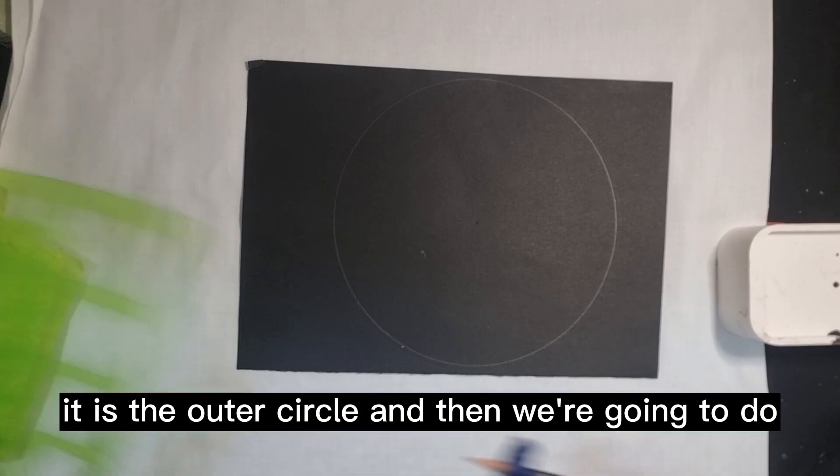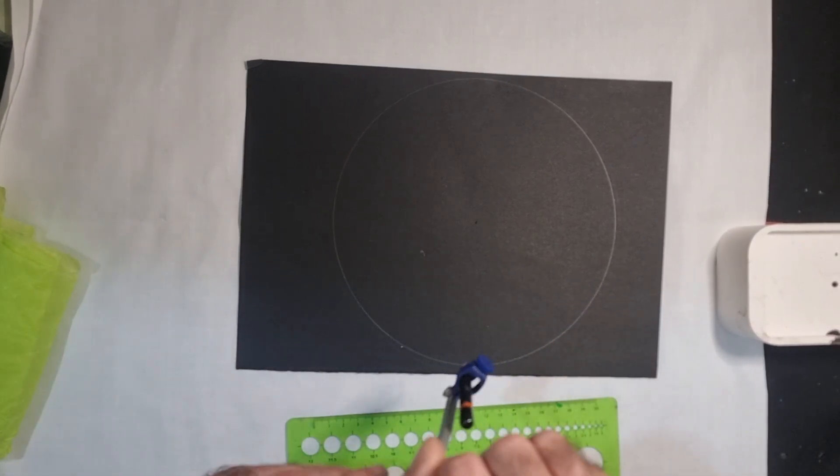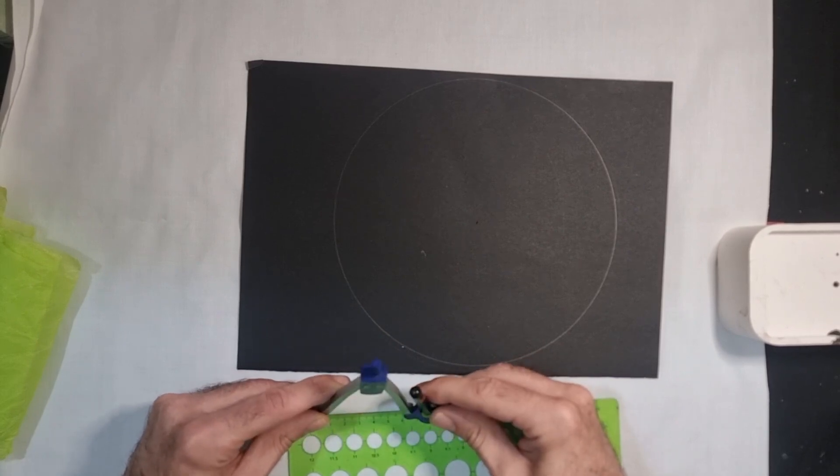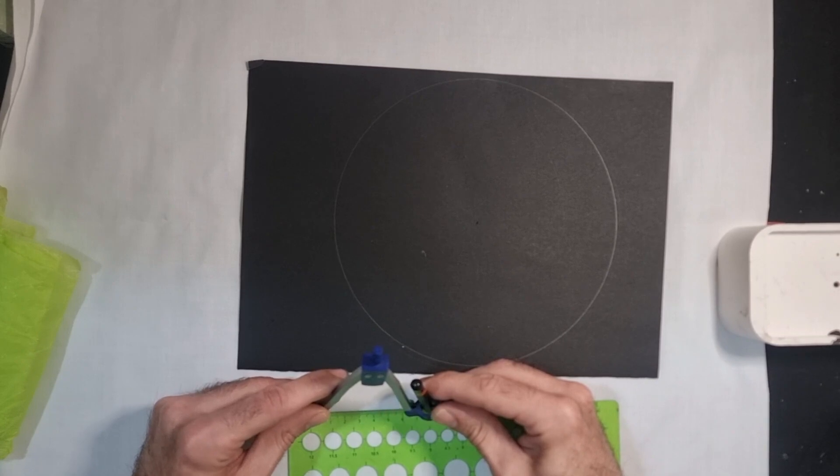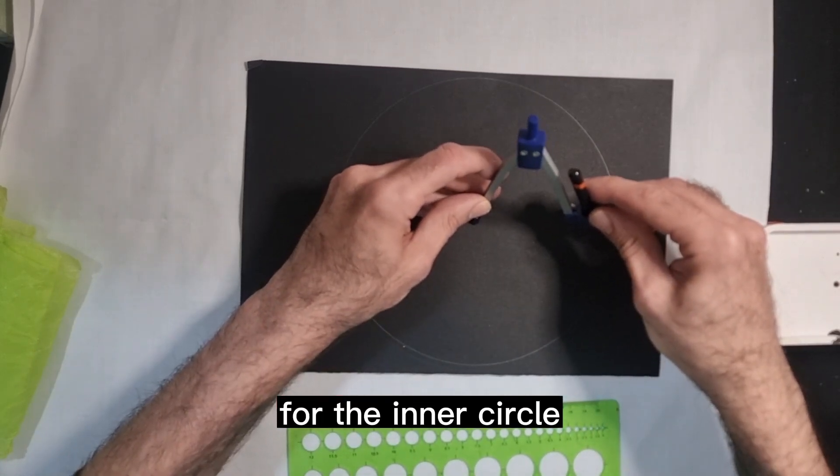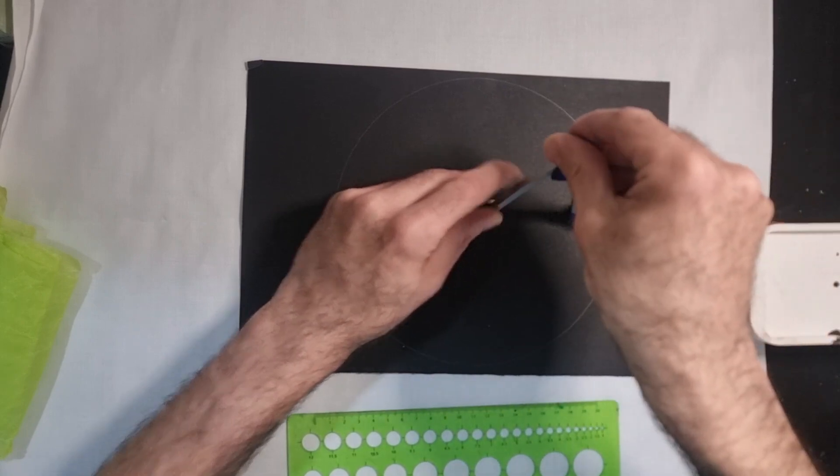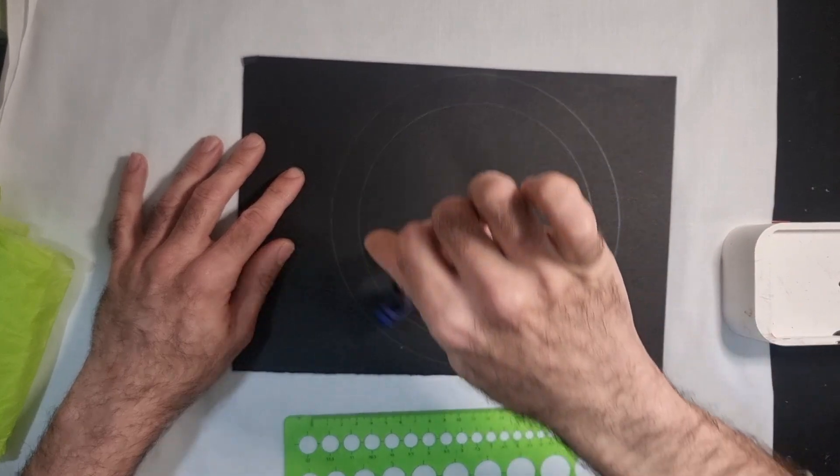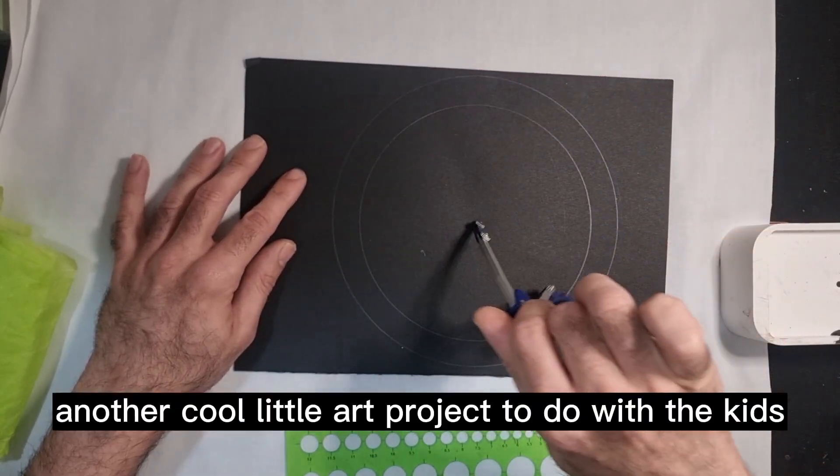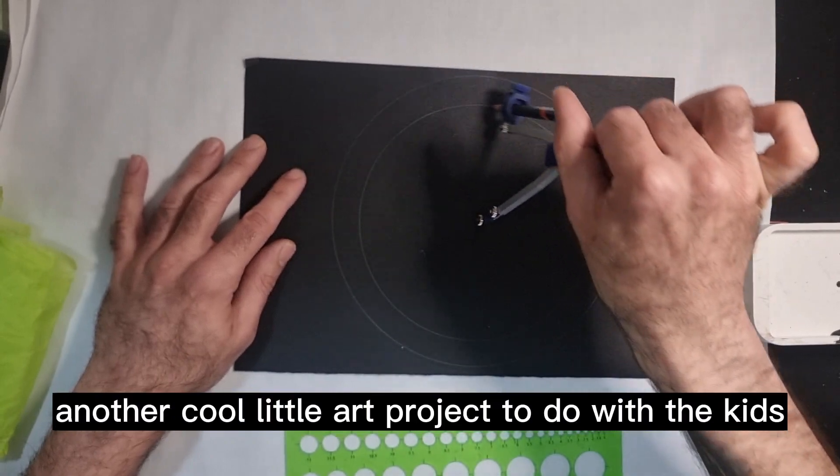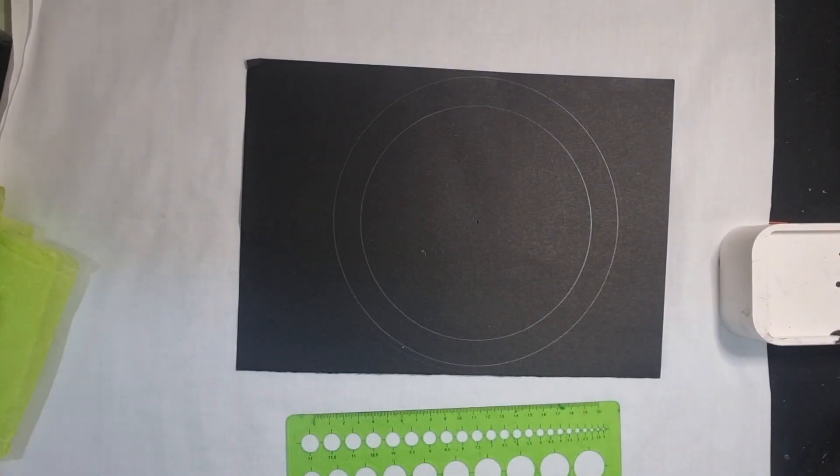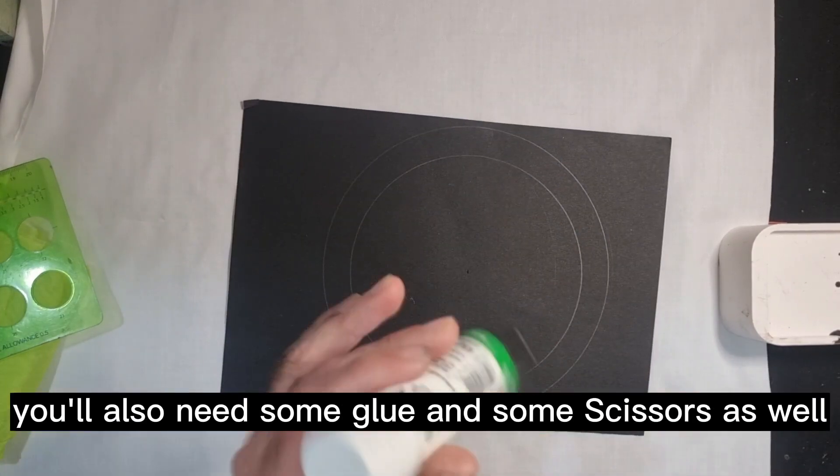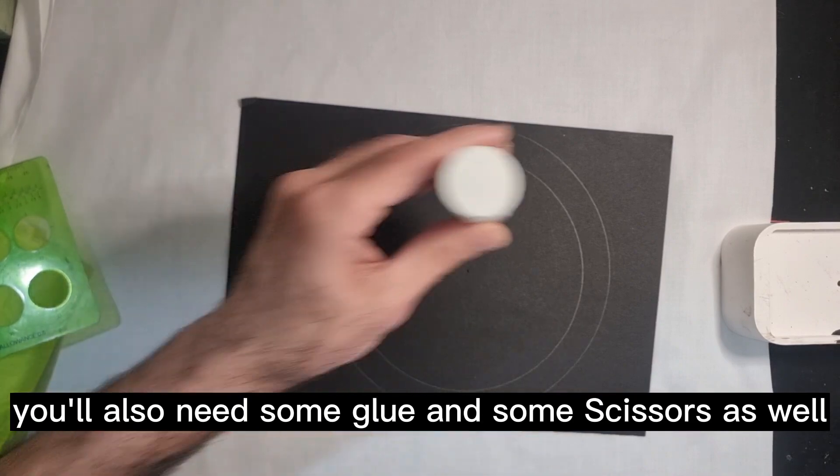So you want to use your bigger plate for the outer circle. So there's the outer circle, and then we're going to do, so that was 10 centimeters, we're probably going to do 8 centimeters for the inner circle. Another cool little art project to do with the kids. You'll also need some glue and some scissors as well.